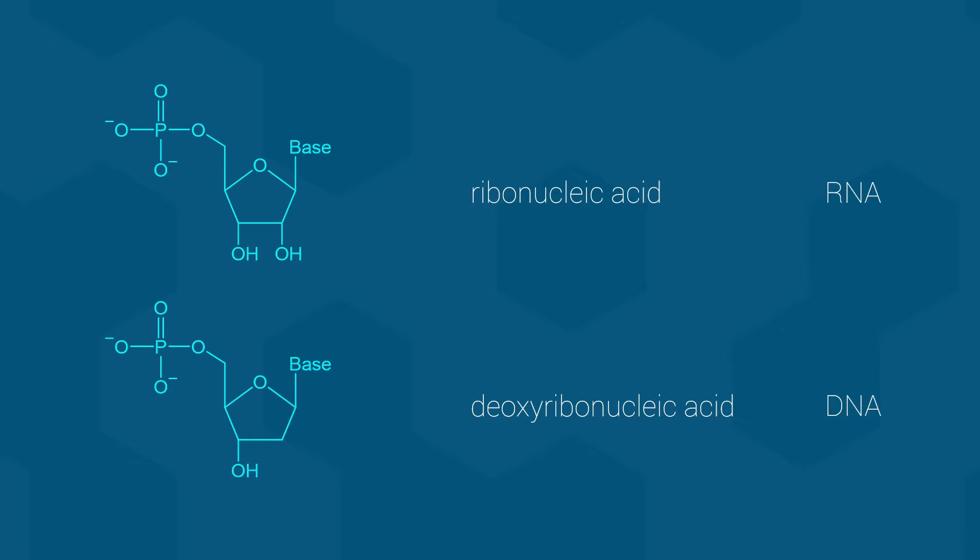As is often the case for sugar-based molecules, we use a numbering system to describe the nucleotide structures. Here, each of the sugar carbon atoms is numbered and tagged with a prime symbol. Thus, we have the 1' to 5' carbon atoms in the sugar groups.